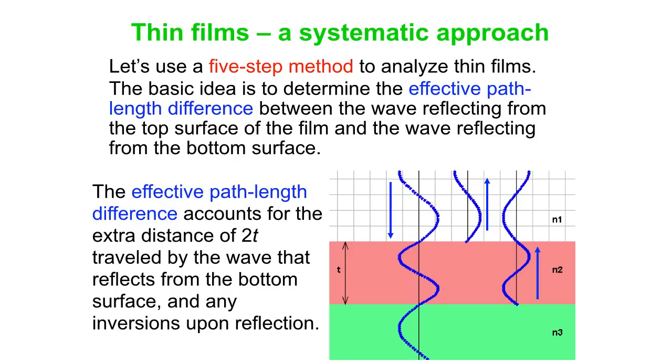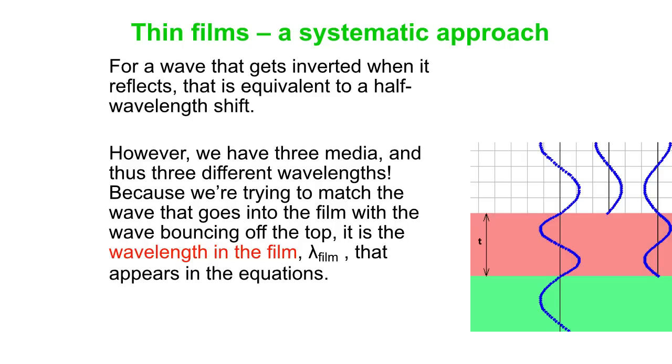The five-step method. We're looking for the effective path length difference. The wave that goes into the film and then reflects off the bottom surface of the film goes down a distance t and back a distance t. It does have a total path length difference of 2t. But then you actually have to count for any flips or inversions that happen upon reflection. When a wave does get flipped upside down, it's just equivalent to moving it by half a wavelength. We have three different media here, and so three different wavelengths. What we're trying to do is match the wave that goes into the film with the wave bouncing off the top. The wavelength that really is critical is the wavelength in the film itself.